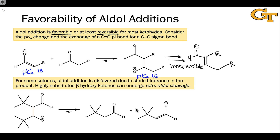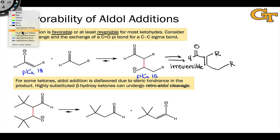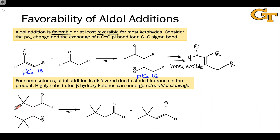An important exception comes in for strongly sterically hindered aldol products. Here we have two very bulky tert-butyl groups attached to the aldol carbons of both the electrophile and nucleophile, creating a situation where there is steric bumping between these two very bulky groups in the aldol addition product. Under these circumstances, the aldol reaction can and often does happen in reverse spontaneously — this is called retro-aldol cleavage.